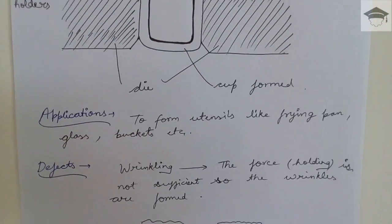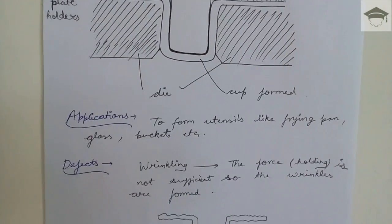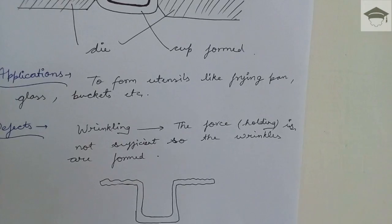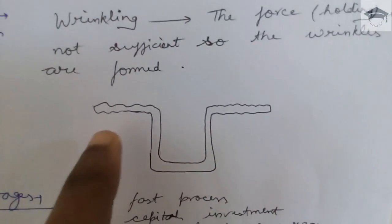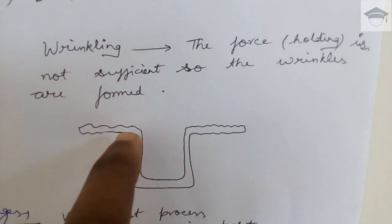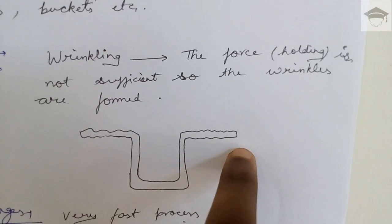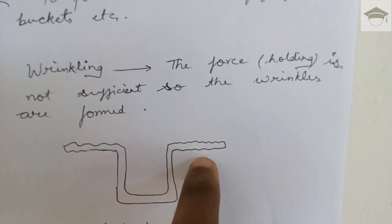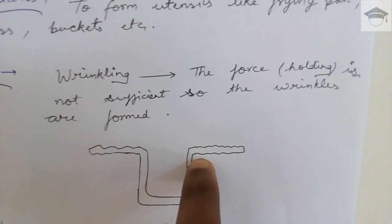And the defects, the main, primarily defect that occurs is known as wrinkling. That is, here, see, if the holding force is not sufficient, then wrinkles are formed on the outer edge of the plate and this defect is known as wrinkling. This is the main defect in deep drawing.